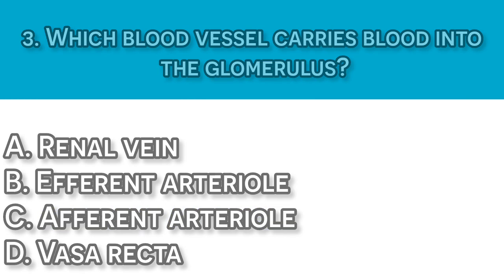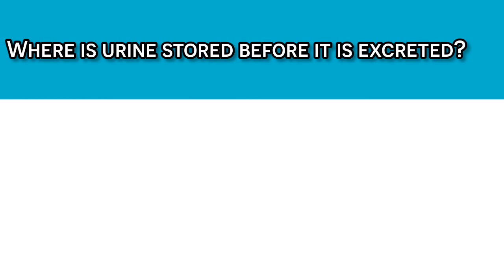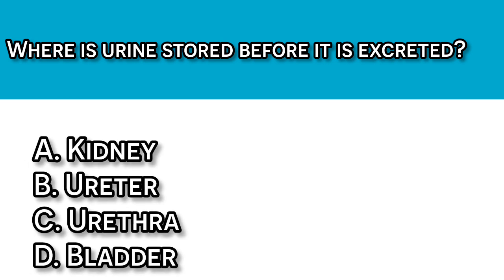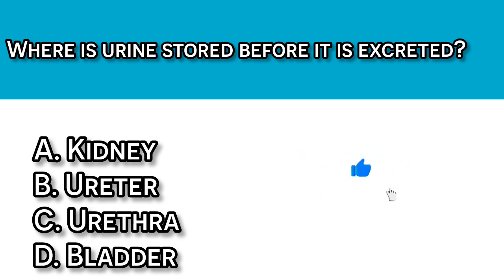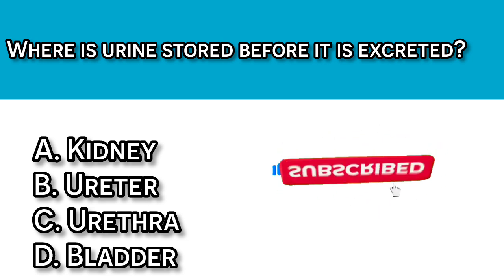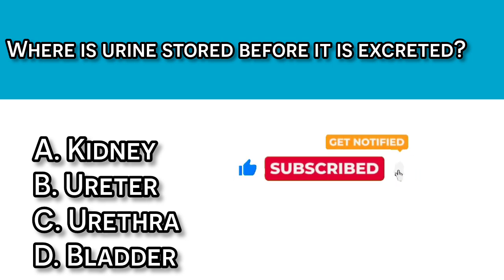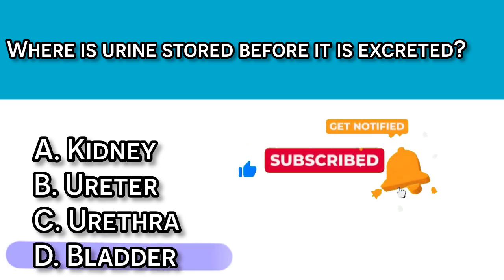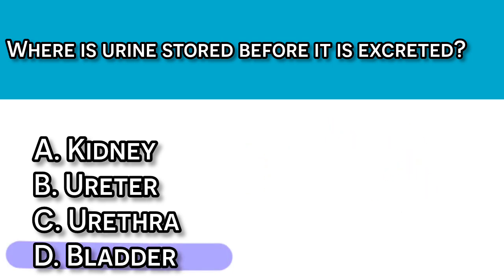Question number four: Where is urine stored before it is excreted? A. Kidney, B. The ureter, C. The urethra, and D. The bladder. The answer here is simply D, the bladder, because the bladder stores urine until voluntary urination occurs.